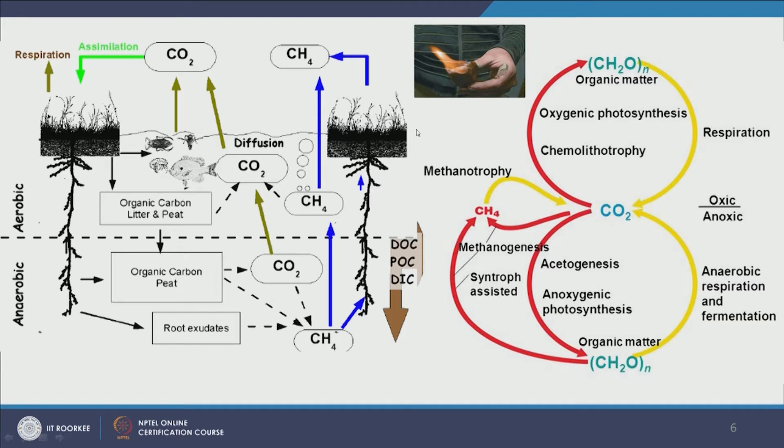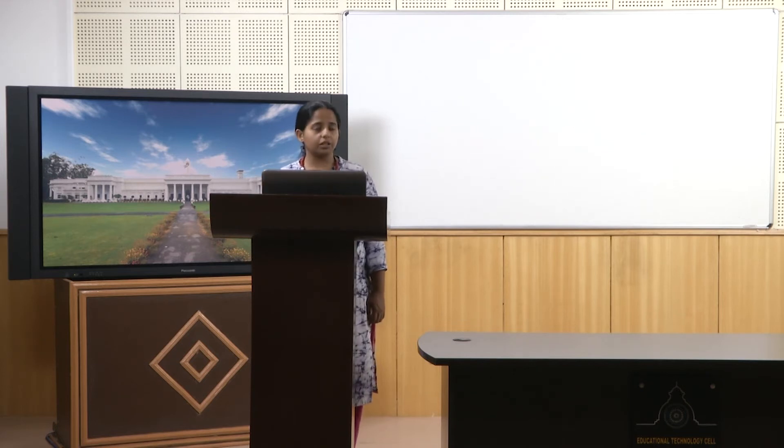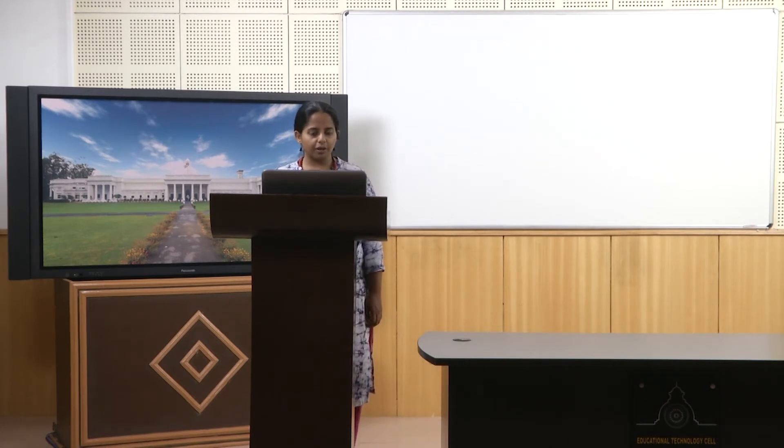Now let us look at nutrient cycles. We have talked about metabolism, functions of microbes, and different ecosystems. A very important question arises: how do these microbes drive nutrients throughout the earth's ecosystem? This question leads us to understand how essential microbes are, and how essential it is to protect environmental health so that microbes can transport nutrients in ways that are beneficial to us. On the left panel you have the carbon cycle, with plants, their root systems, and aerobic top and anaerobic bottom soil layers.